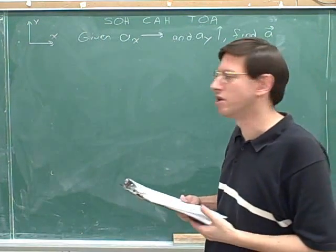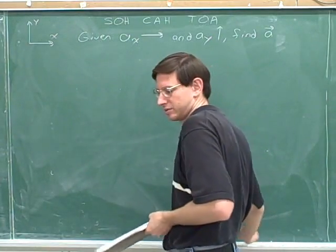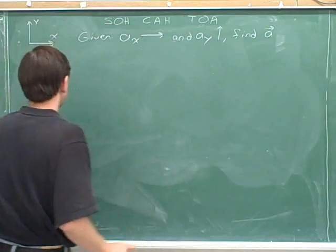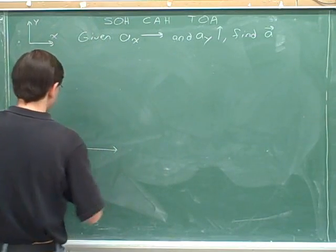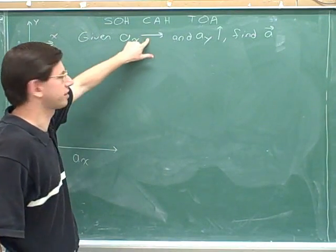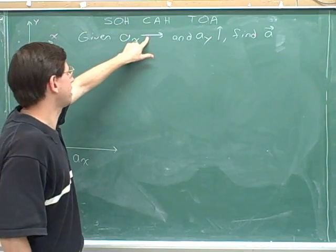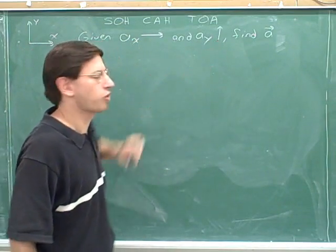This is one of those no number problems. We can start by drawing a sub x. I'm not going to worry about making this arrow the same length as this arrow. The point of this was just that a sub x is pointing to the right and a sub y is pointing up.